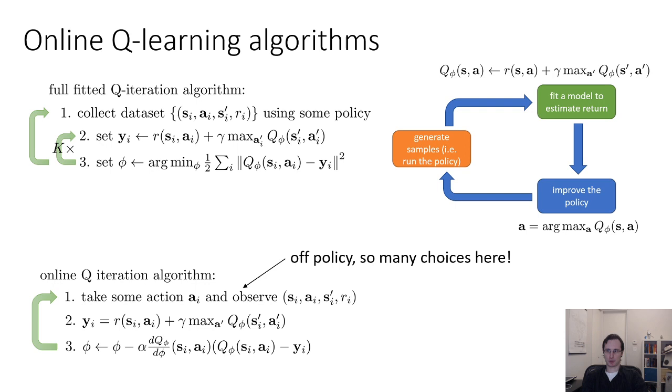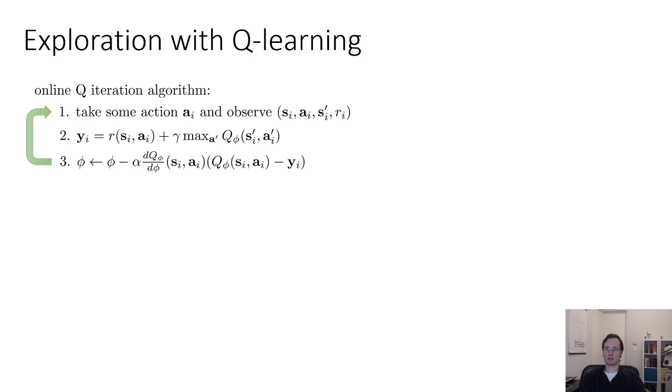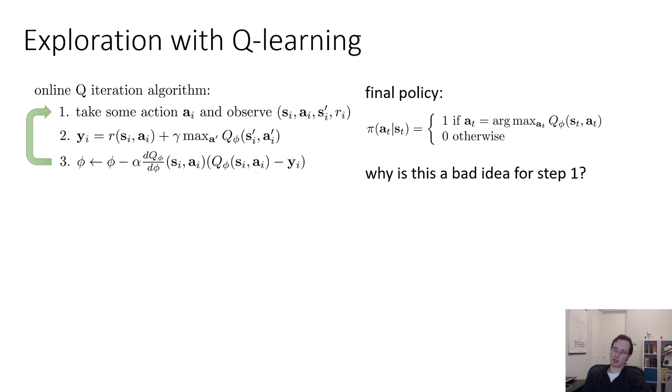One choice we have to make is how do we choose the actions? This algorithm is off-policy, meaning that you don't have to choose the actions with the argmax policy in order for it to work well. Essentially, what you want to do is choose actions that perform effective exploration. You could choose actions according to the argmax policy, but this is actually not a very good idea. The issue is that if you choose your actions using the argmax policy and your initial Q function is very bad, it might erroneously assign a high probability to some really bad action that leads you to a dead end. If you always choose that action, you might just never see the rest of the environment. You might always do the same bad thing and never find out that there are better things available to you.